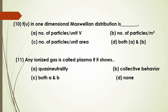For the 10th MCQ about the one-dimensional Maxwell distribution, the question asks about the number of particles per unit volume. The answer is D — both A and B options are correct.